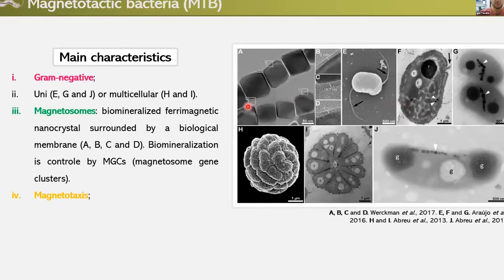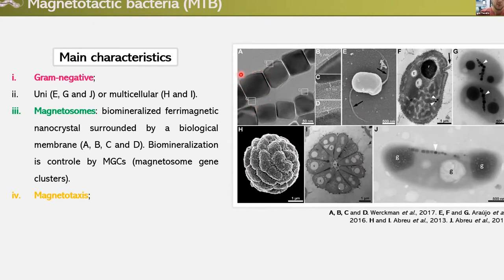The main characteristics of this group of bacteria are that they are gram negative. They can be unicellular microorganisms — here we can see the flagella — or they can be multicellular, called MMPs: multicellular magnetotactic prokaryotes. They are capable of synthesizing, or more precisely biomineralizing, a ferromagnetic nanocrystal called the magnetosome, surrounded by a biological membrane as we can see on the STEM image.